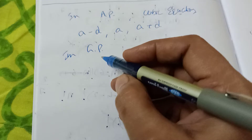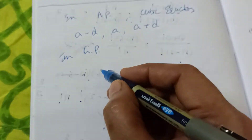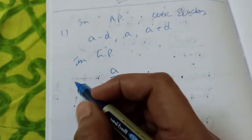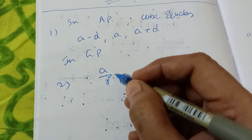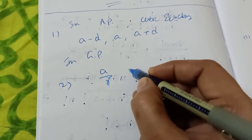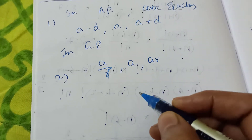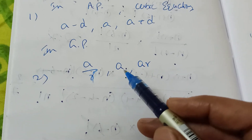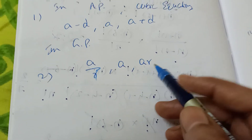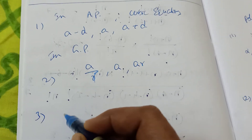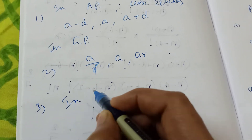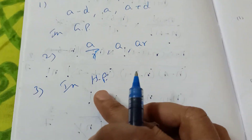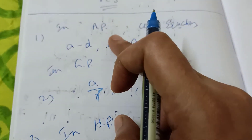If three roots are in GP, take them as a/r, a, ar. So the roots in GP are a/r, a, and ar.